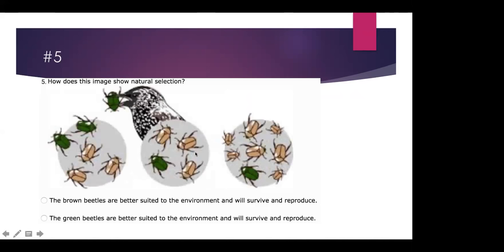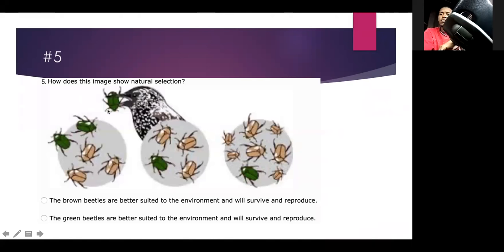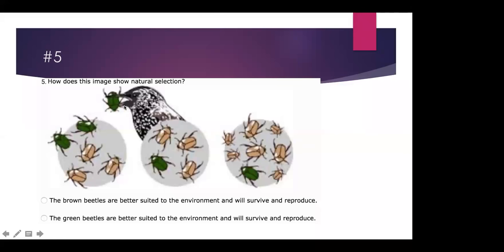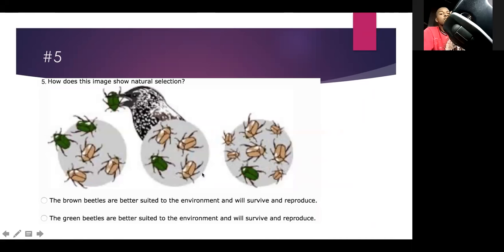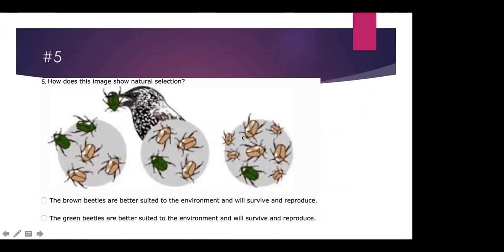How does this image show natural selection? On the very far side we have two green and three brown beetles. This bird is really going after the green beetles. In the next picture we have three tan ones and one green one, and then over time we have a lot more tan ones. The brown ones are better suited to the environment because they're not getting eaten by the bird.